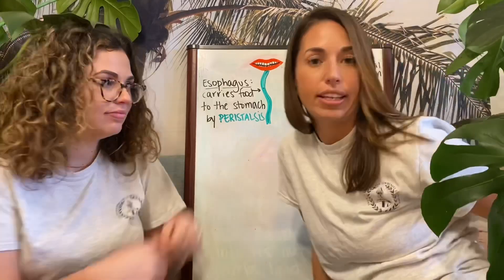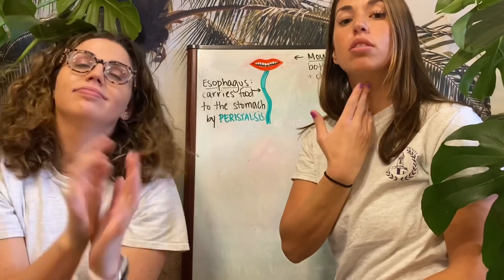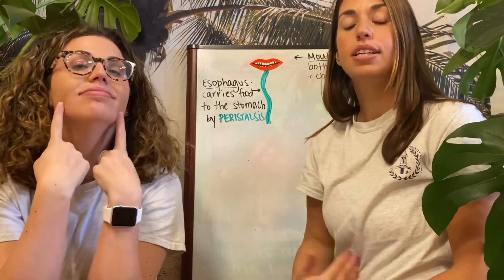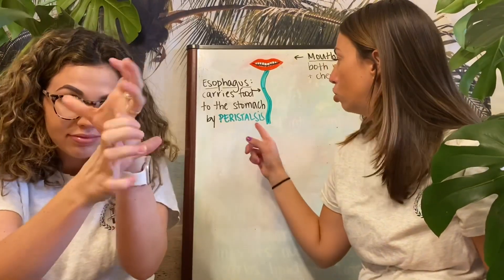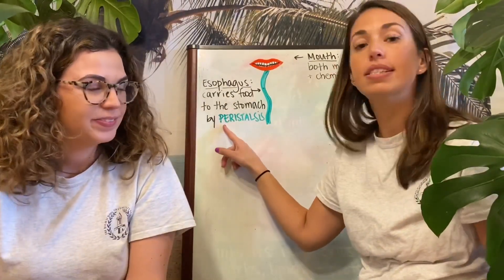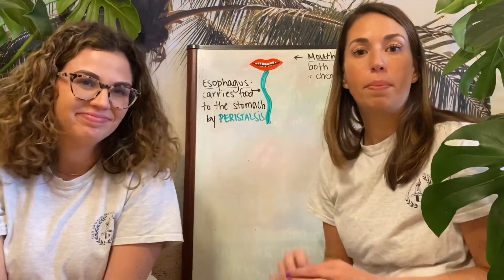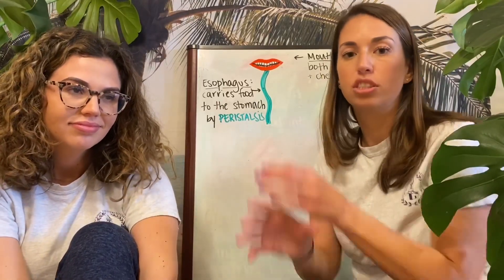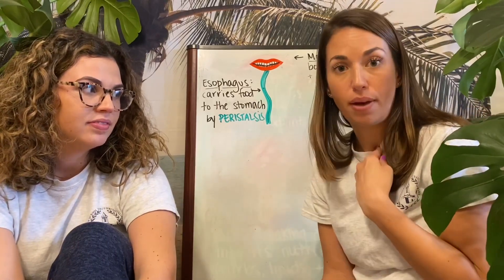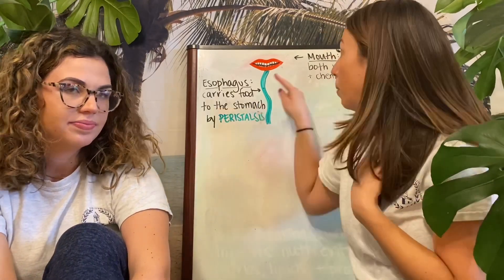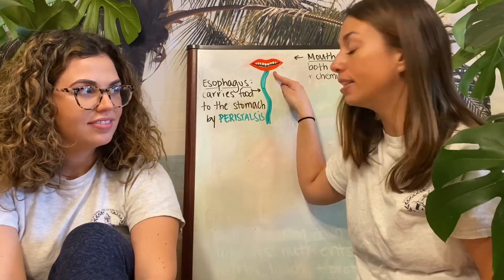The next organ is the esophagus. This is the tube that sits in the back of your throat and allows food to travel from the mouth and throat down to the stomach. It's just a tube of muscle, but it uses a process called peristalsis — muscular contractions where the muscle squeezes and squeezes — to get food from the top to the bottom. That feeling you have when you swallow is peristalsis at the top of the esophagus, and it continues all the way down.